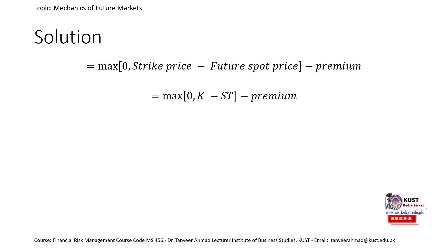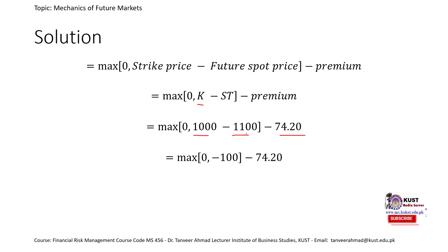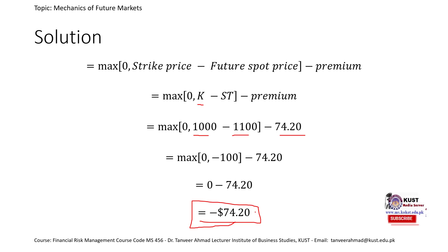Using the formula with K = 1000 and ST = 1100, we get: maximum of 0 or (1000 minus 1100), minus the premium of 74.2. This gives us 0 minus 74.2, resulting in a loss of 74.20. So the loss for the put option holder is 74.20 when the price increases to 1100.